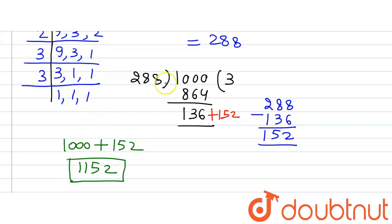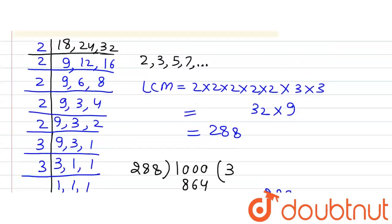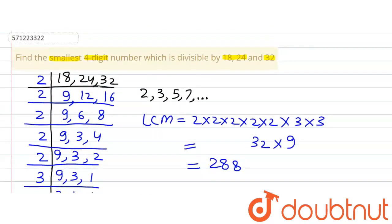So 1152 is our required answer. 1152 is divisible by 288, which means it is also divisible by the factors of 288 — that is, 18, 24 and 32. That's it. Thank you.